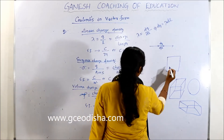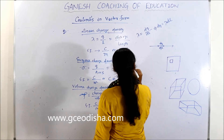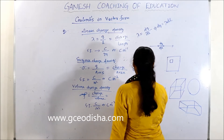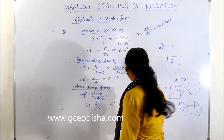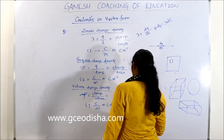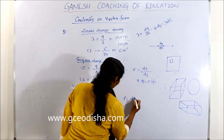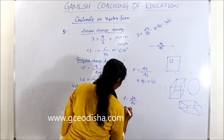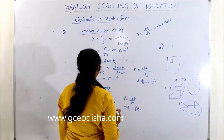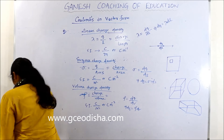For a small area element, we write sigma equal to dQ by dS. Therefore dQ equals sigma times dS. Similarly, for small volume, rho equal to dQ by dV, and dQ equal to rho times dV. So we have linear charge density, surface charge density, and volume charge density defined.